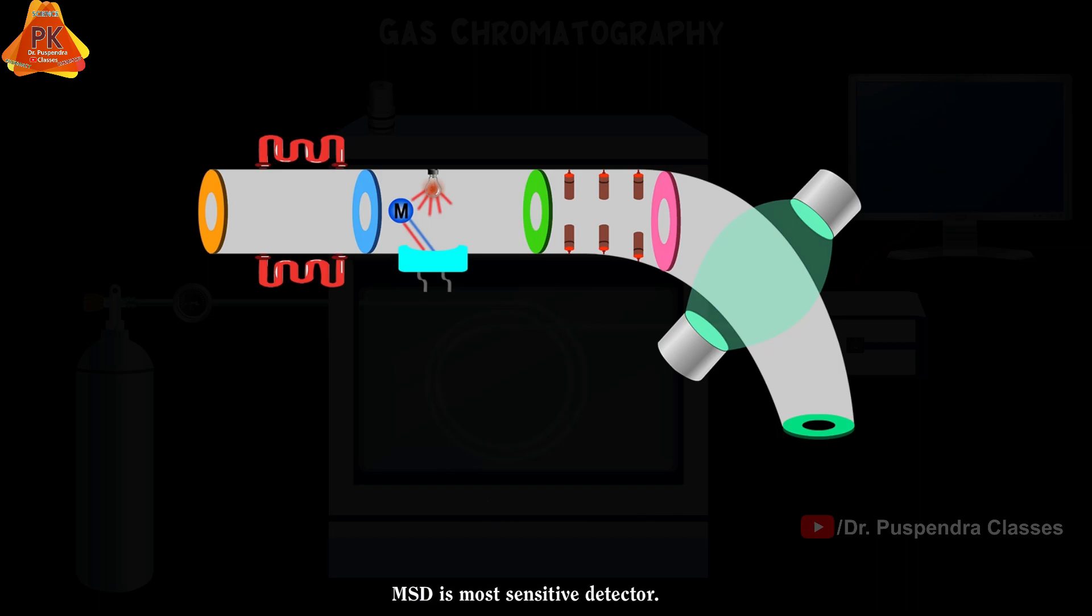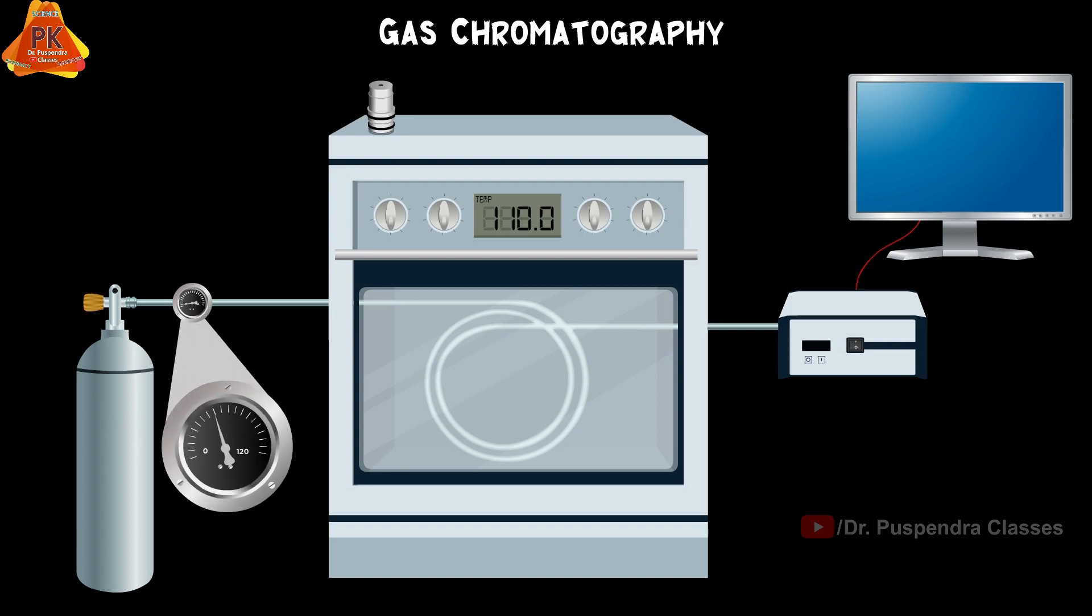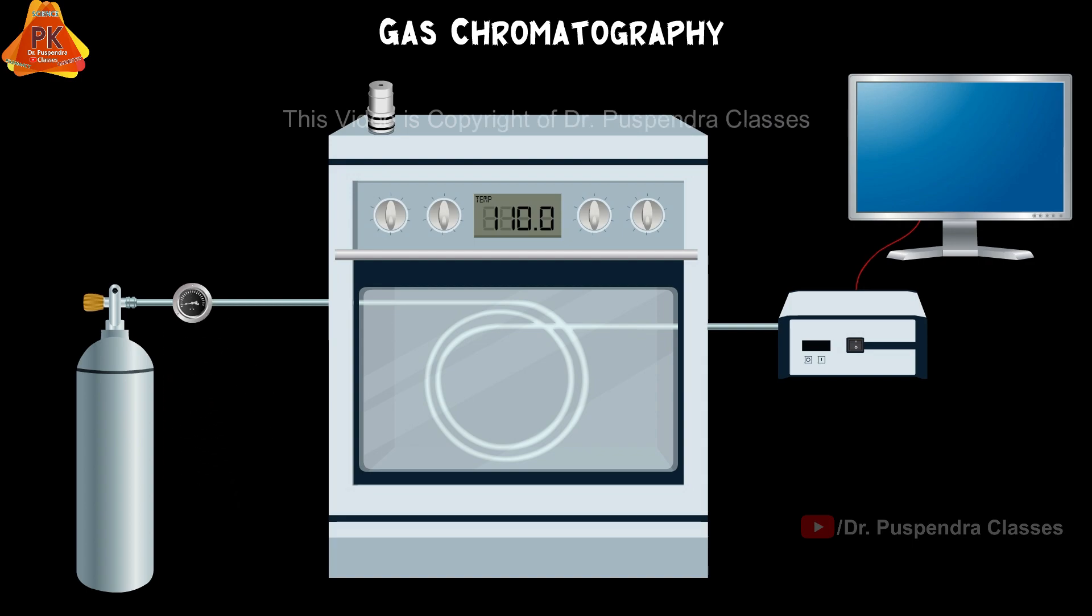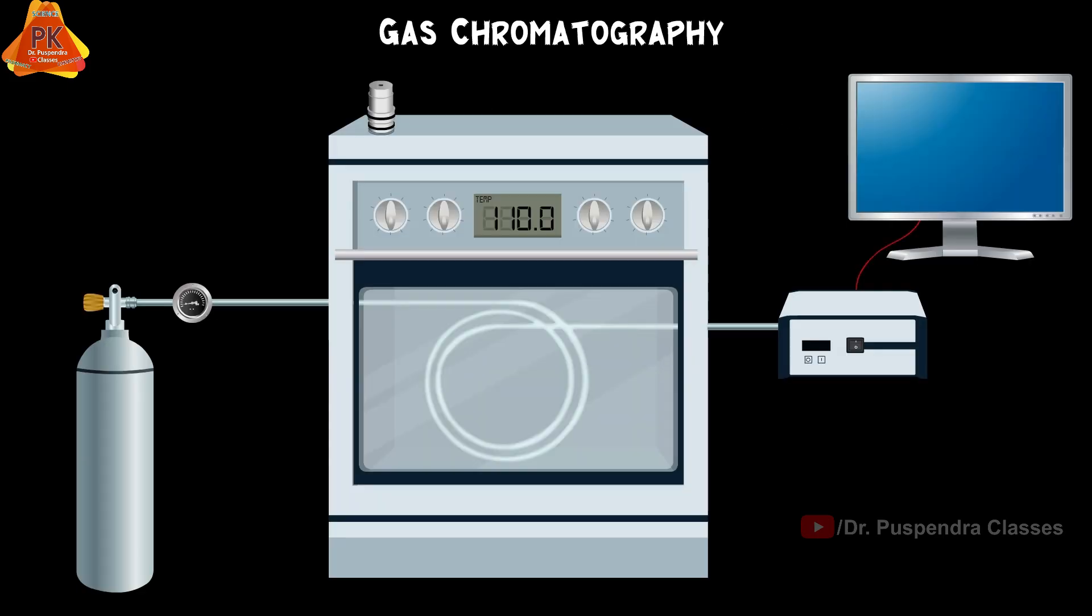Now coming to the working of the GC instrument. First, we will open the gas tank valve, then set the pressure of gas mobile phase at 40 to 80 per square inch. Gas mobile phase will be flowing in the GC column. After that, we will inject the sample through the sample inlet.